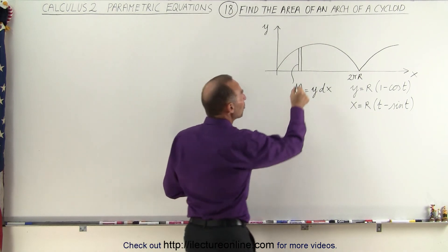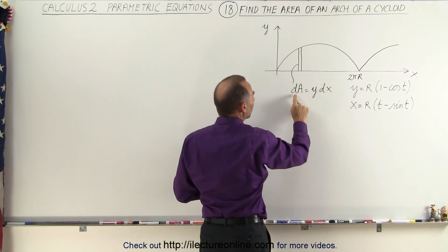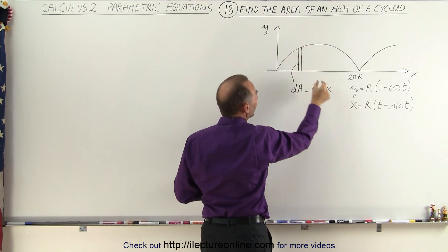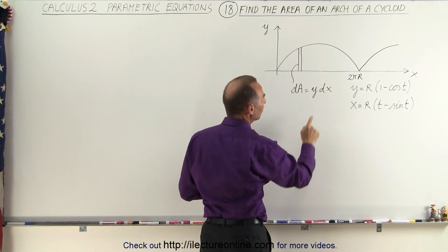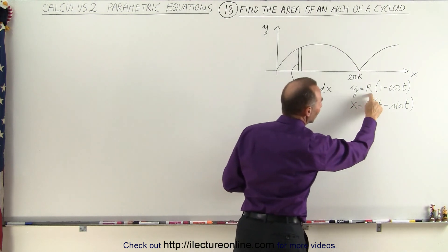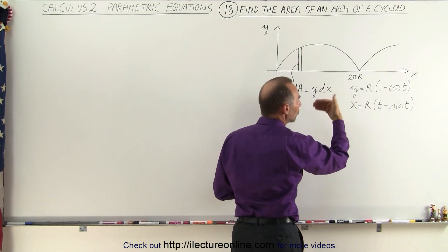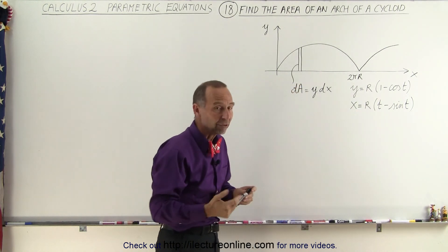To do that we need a small area element and we're going to call that dA which is equal to the height y times the width dx, which means y is already defined in terms of t but dx now needs to be defined so we're going to take the derivative of x with respect to the parametric variable t.